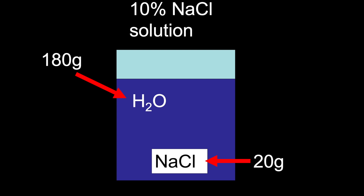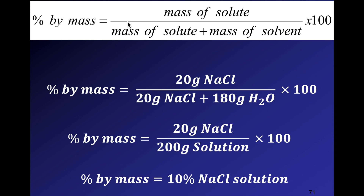For example: 20 grams of sodium chloride dissolved in 180 grams of water gives a 10% sodium chloride solution. The percent by mass is mass of solute over (mass of solute plus mass of solvent) times 100. So: 20 grams ÷ (20 + 180 grams) × 100 = 20 ÷ 200 × 100 = 10% sodium chloride solution.